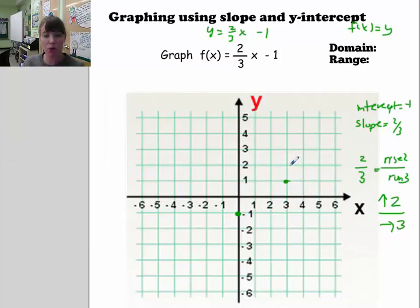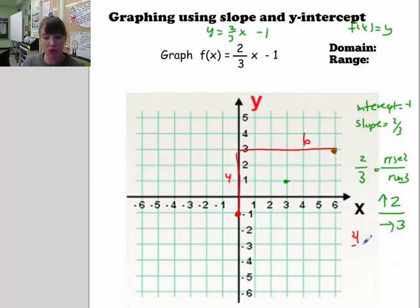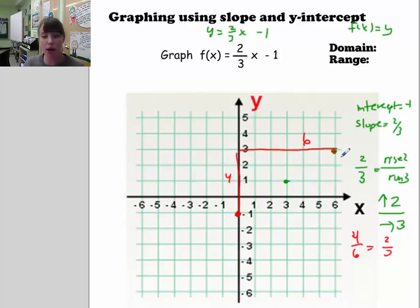I can do that again — up 1, 2, and right 1, 2, 3 — and there's another point. Notice that between the first and third points, the rise is 4 and the run is 6. That's because 4 over 6 equals 2/3. So to get a point farther away from the first one, you can make an equivalent fraction by multiplying numerator and denominator by the same number.